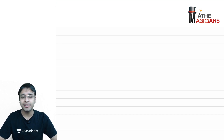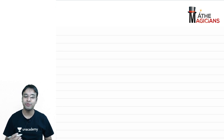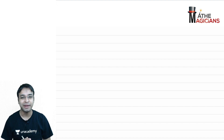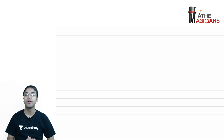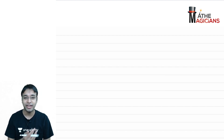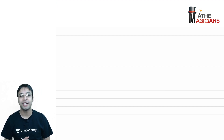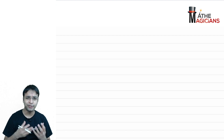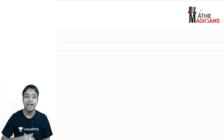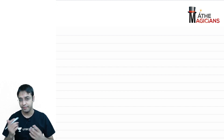Hey guys, what's up? This is CA Nishant Kumar and I welcome you to this brand new channel of Unacademy by the name of Math Magician. In this video, we're going to discuss the concepts of permutations — what is permutation, what is straight line permutation, what is circular permutation, what are the formulas to calculate them, and how is circular permutation different from straight line permutation.